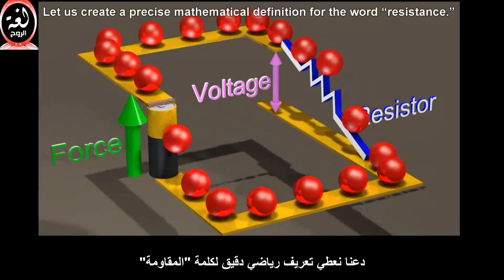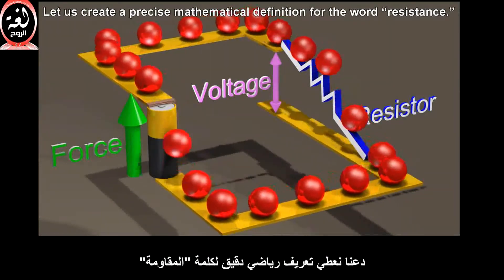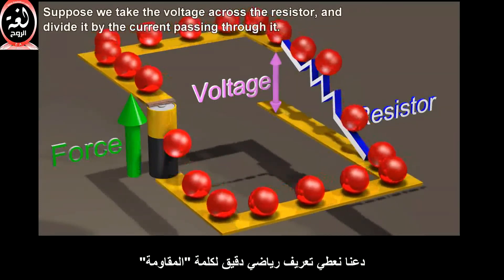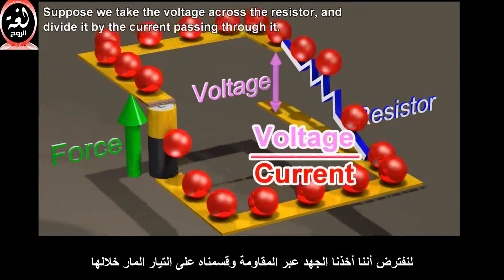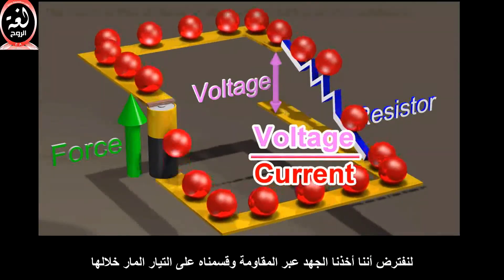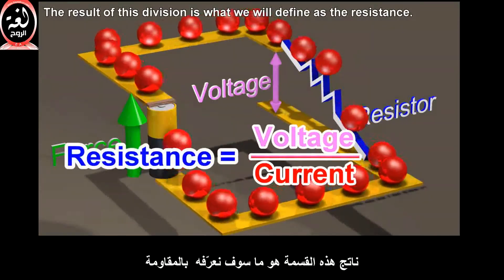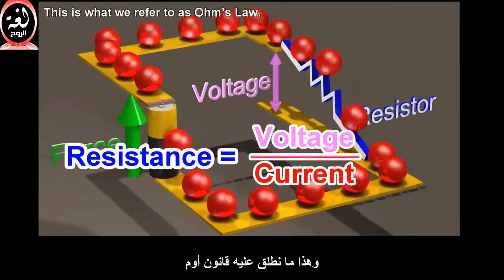Let us create a precise mathematical definition for the word resistance. Suppose we take the voltage across the resistor and divide it by the current passing through it. The result of this division is what we will define as the resistance. This is what we refer to as Ohm's law.